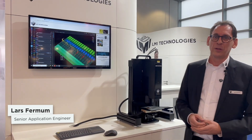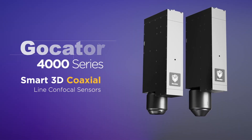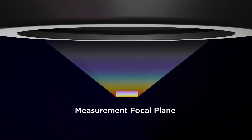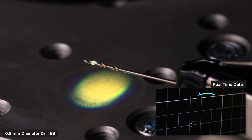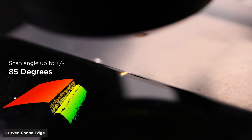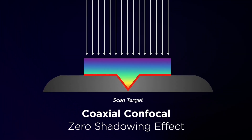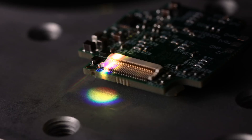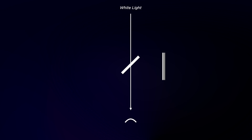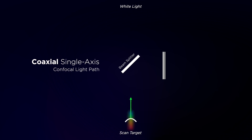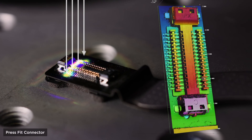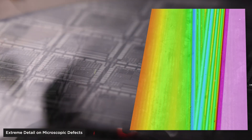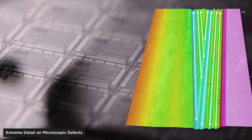Here at this demo, you can see our new locator series 4000. This is a confocal scanner that allows you to scan parts in 3D. We get 3D topography, 3D tomography, multi-layer data, and intensity data. This sensor gives you best-in-class performance on challenging materials like transparent materials, metals, semiconductor materials, and others. The sensor itself has a resolution of 2.6 microns and gives you a Z repeatability of 0.25 micrometers.